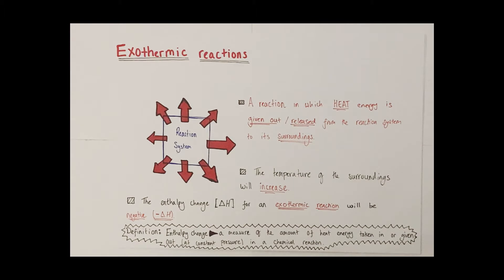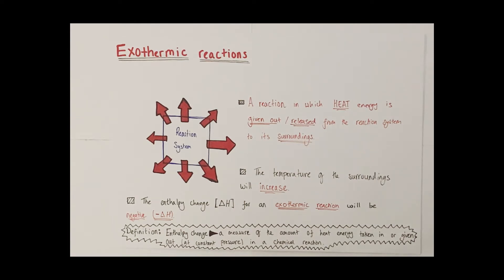At this point I'm going to try and define the term enthalpy change because it will be really useful going forwards. An enthalpy change is a measure of the amount of heat energy taken in or given out at constant pressure in a chemical reaction. The reason why we use the term constant pressure is to create uniformity, so that anywhere across the globe when we talk about enthalpy change we know we're talking about the same value.